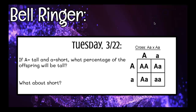So the bell ringer question today — like I said, it's all going to be reviewed leading up to your test on Friday. So if capital A represents tall and lowercase a represents short, what percentage of the offspring will be tall? Well, if the dominant trait is tall, all you have to do is look in the Punnett square and out of the four boxes, count how many have a capital letter. When you do, you have this box, this box, and this box — so three out of four boxes would have the dominant trait of tall, which would be 75%.